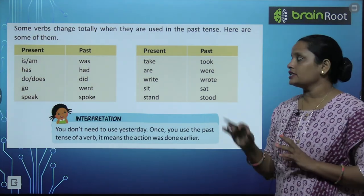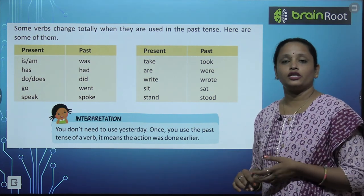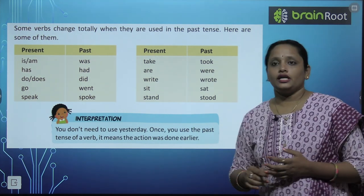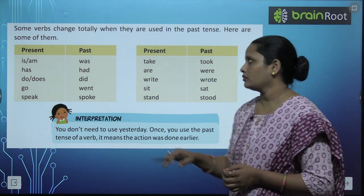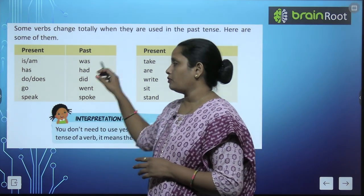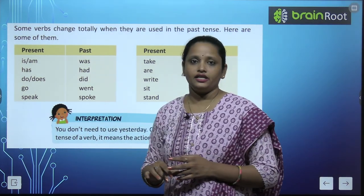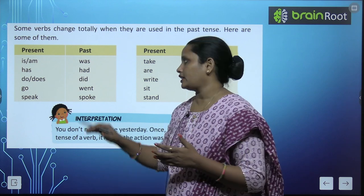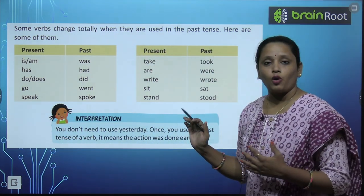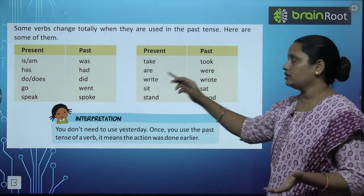Some verbs change totally when they are used in past tense. Here are some of them. Present and past: is/am → was, has → had, do/does → did, go → went, speak → spoke, take → took, are → were.